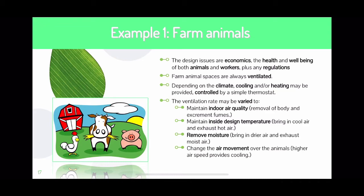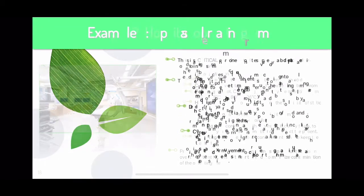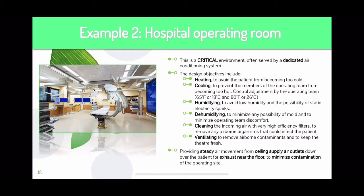The next example is hospital operating rooms or operating theaters, where it is very critical that these environments have dedicated air conditioning systems. In my master's degree project, I went to an operating theater and studied the air movement inside the room and indoor air quality that needs to be maintained for both staff like doctors and nurses and for patients on the bed. The design objective includes heating to avoid patients becoming too cold, or cooling to prevent operating team members from becoming too hot.